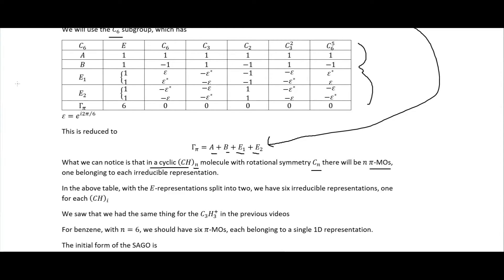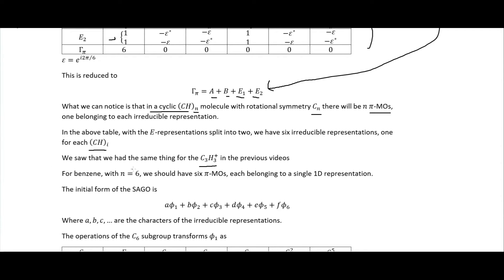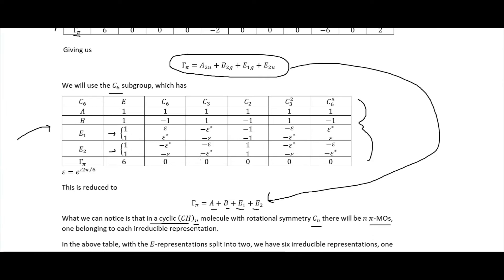So in the above table, so if you have this one with the subgroup up here, the E representations we split into these two like this, which gives us a total of six up here. So six irreducible representations, we have one for each of the pz orbitals in the CHn. We actually had the same thing in our previous example with the C3H3, which if you remember had the three pz atomic orbitals which formed into that pi bond. And so for benzene with n equals six, we should have six pi molecular orbitals, each belonging to a single 1D representation, where we have split these E1 and E2 up into these two 1D irreducible representations.